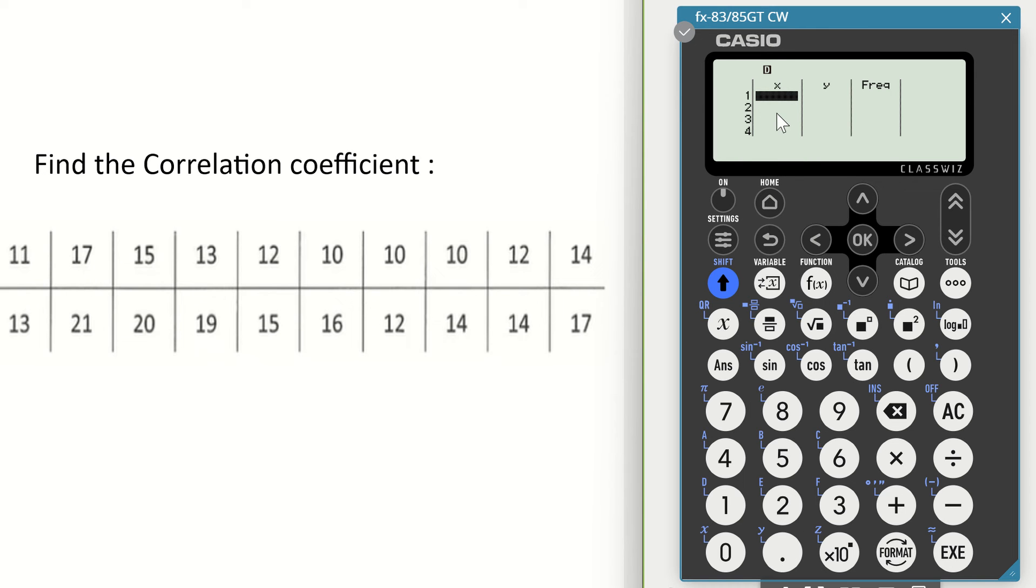I go to my calculator and I type in 11 and press equals. When you press equals, you'll see the data go into the table. I then put in 17, press equals, 15 equals, 13 equals, and so on. You put in each piece of data individually. When I get to my final piece of data, 14, I press equals.